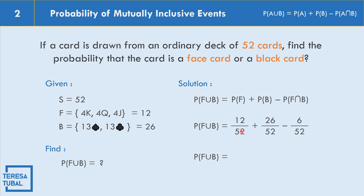Solving: 12 plus 26 minus 6 equals 32 over 52. The lowest term of 32 over 52 is 8 over 13, because 32 divided by 4 is 8 and 52 divided by 4 is 13. So the probability that the card is a face card or a black card equals 8 over 13.